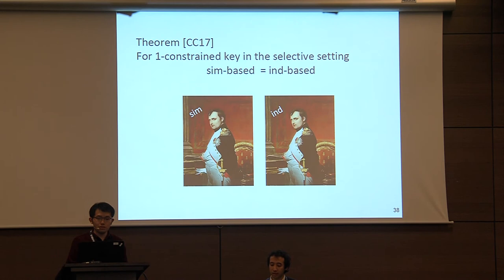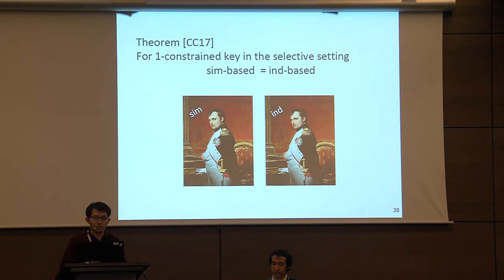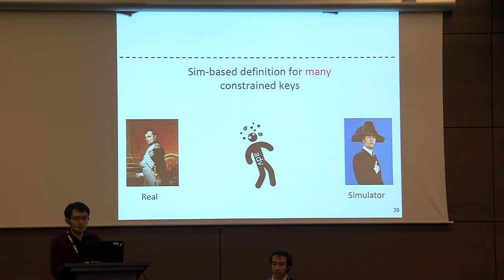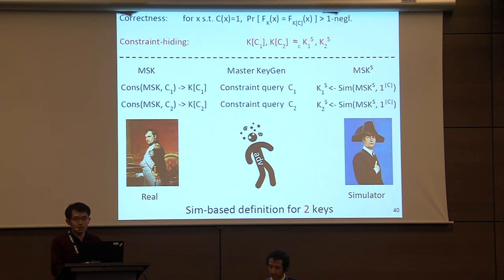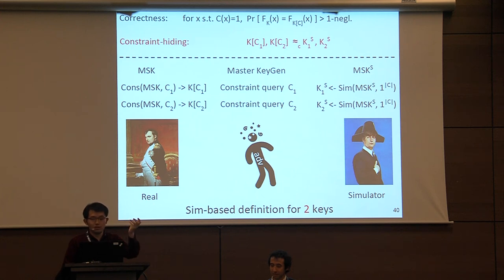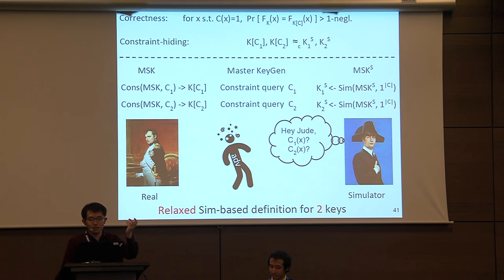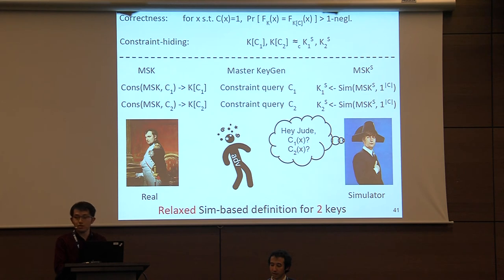For one constraint key with polynomially many input queries, the simulation-based definition is equivalent to the indistinguishability definition. For many constrained keys, even with two keys you can do consistency checks and recover full functionality. You can relax the definition by allowing the simulator to ask queries, but there are some problems there that I will mention later.